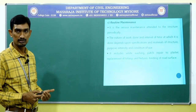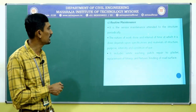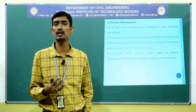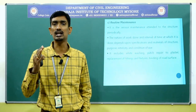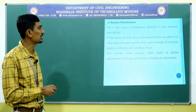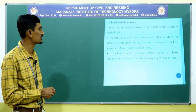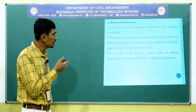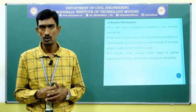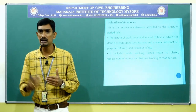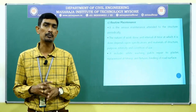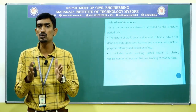Routine maintenance is service maintenance attended to the structure periodically. We need to perform certain maintenance compulsorily in order to enhance the lifespan — this is called periodical maintenance. The nature of work done and interval of time depends upon the specification, material of the structure, purpose, intensity, and condition. Periodical maintenance does not mean monthly maintenance — it suggests intervals like after one year, two years, or three years.